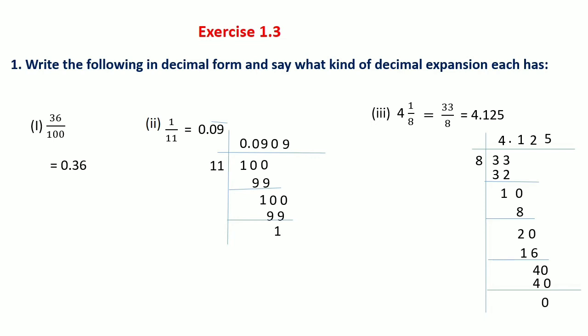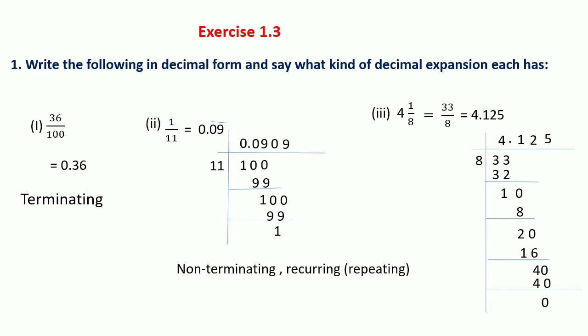We observe in each case: the decimal expansion of 36 upon 100 is terminating; 1 upon 11 is non-terminating recurring; and 4 and 1 upon 8 is terminating.